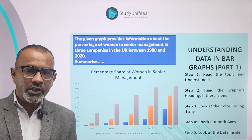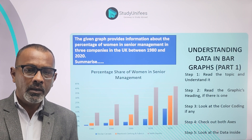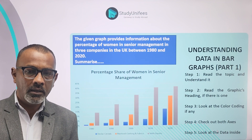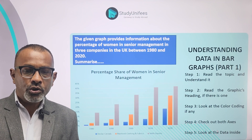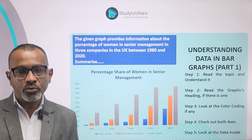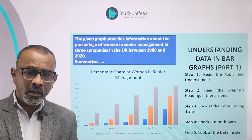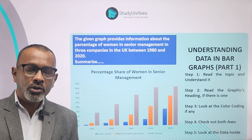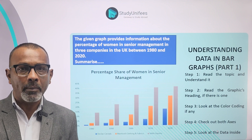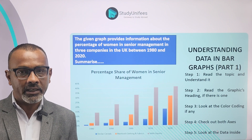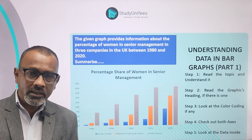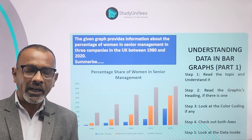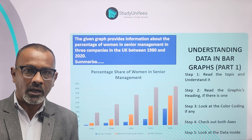Step number 4: check out both axes. The vertical axis shows percentages. The lateral axis shows the timeline from 1980 to 2020. Now let's look at the data inside. The data inside shows the percentage of women in each company that held positions in senior management. This is the first part of understanding data completely when tackling a bar graph in writing task 1.